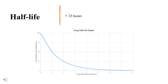Phenofibric acid, the active metabolite of fenofibrate, has a half-life of 23 hours. Fenofibrate has a half-life of 19 to 27 hours in healthy subjects, and up to 143 hours in patients with renal failure.